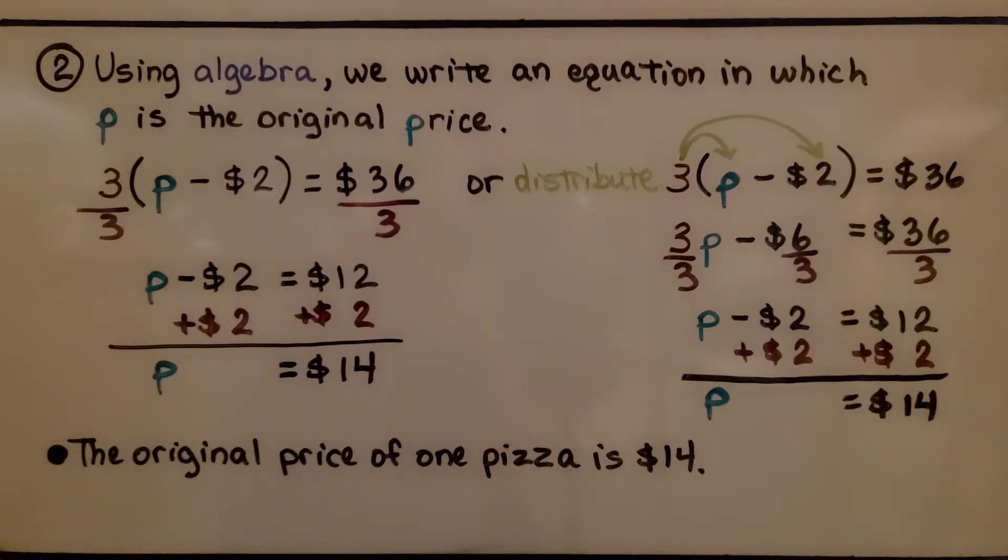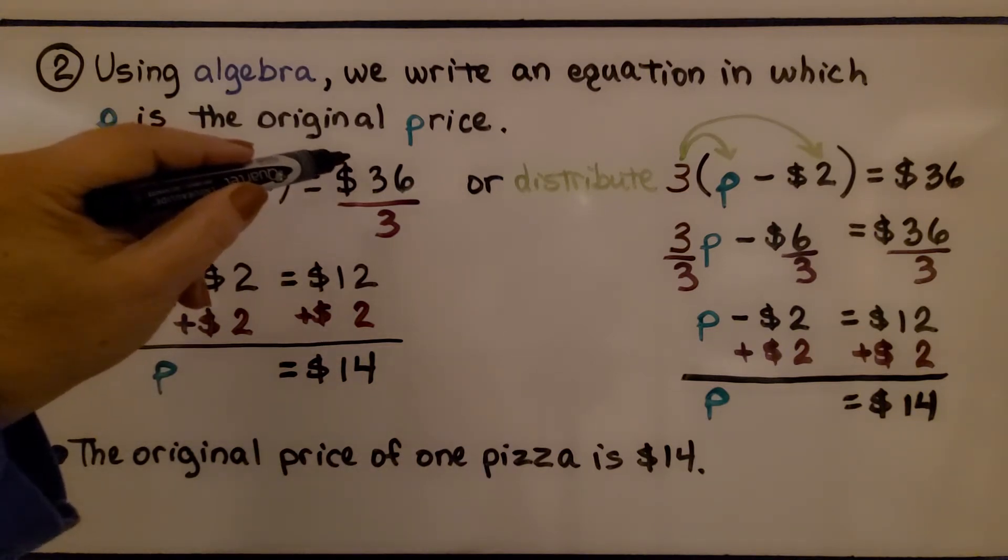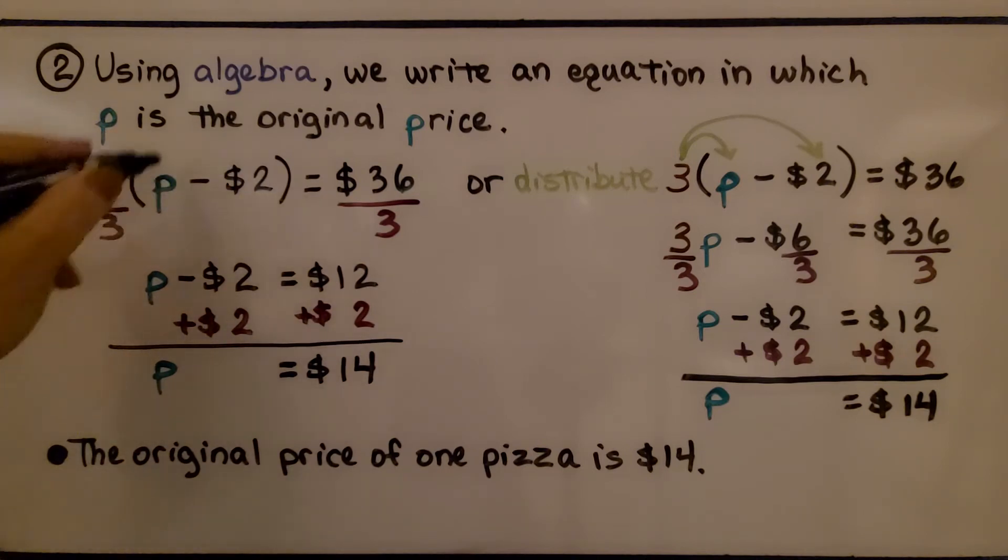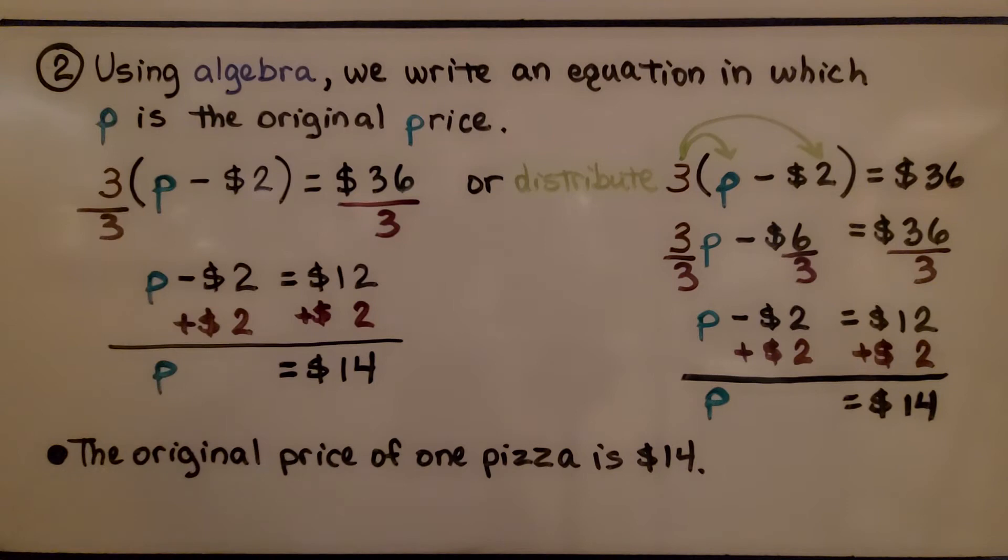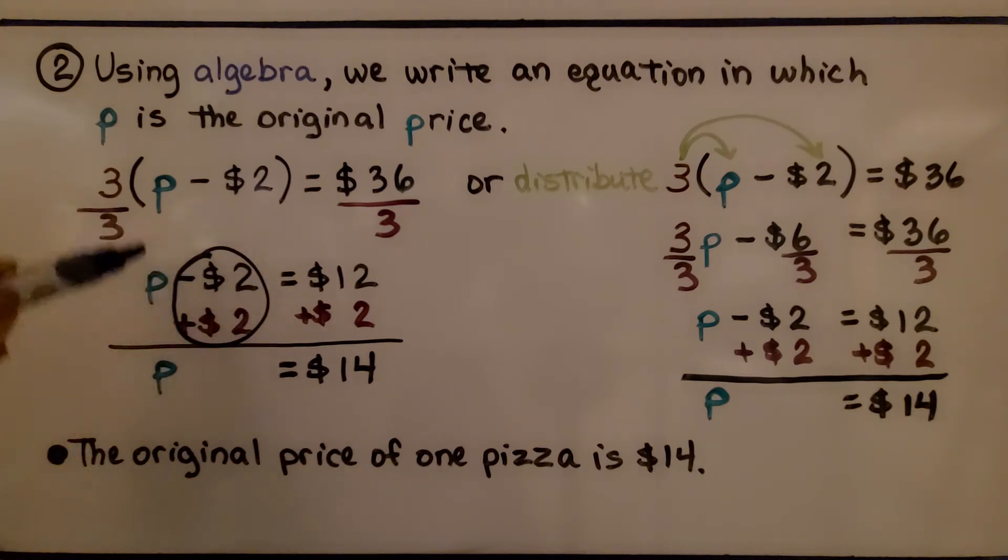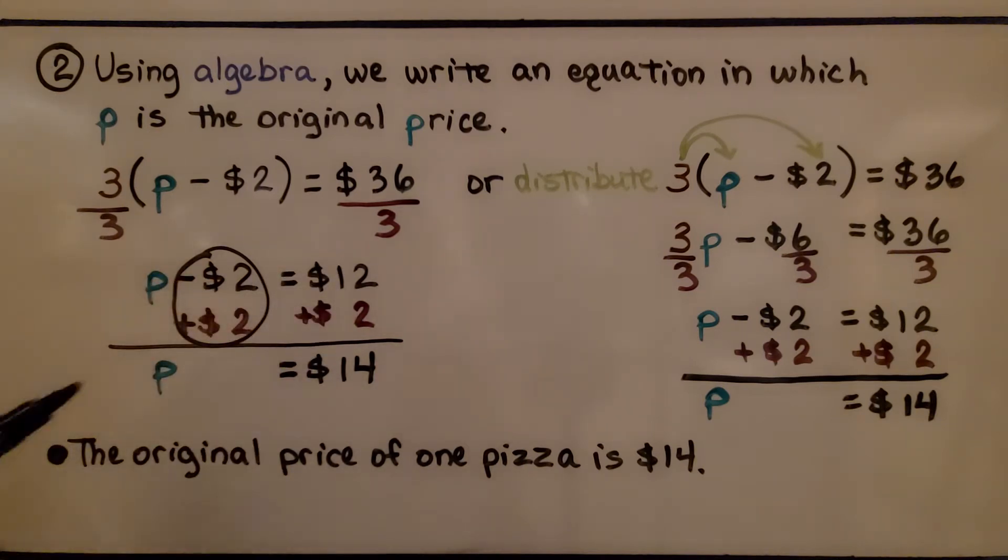Using algebra, we write an equation in which p is the original price. So he bought 3 pizzas, and it was an original price minus the $2 coupon, and that was equal to $36 he paid. We can immediately divide both sides of this equation by 3. We ignore the parentheses. We divide the 3 by 3 and the $36 by 3. That's going to give us a 1 here. So identity property, if this is 1 times p minus $2, then we just have p minus $2, and it's equal to $12. Now, we use the inverse operation of adding $2 to each side so that we can create a zero pair here. Minus $2 plus $2 makes a zero, and $12 plus $2 makes $14. We know each pizza was $14.